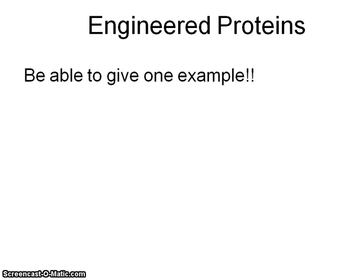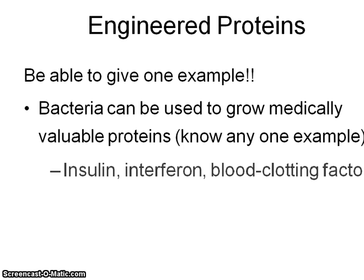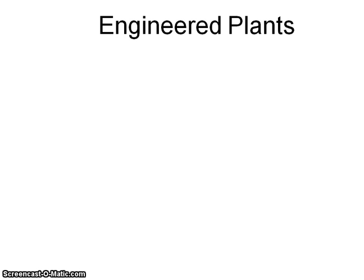The rest of these things — just be able to give some kind of an example of an engineered protein. For example, we know that we can make bacteria that make human insulin, blood clotting factors involved in people with hemophilia, and interferon, which has to do with the immune response. We can also make vaccines by purposely putting genetically engineered plasmids in that will stimulate the immune system in a particular way.